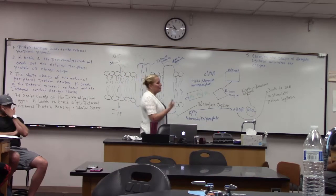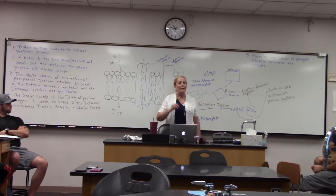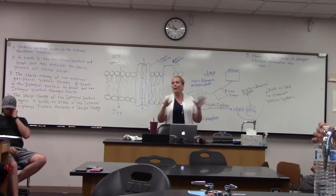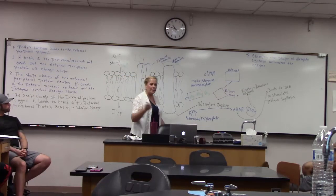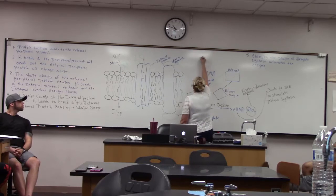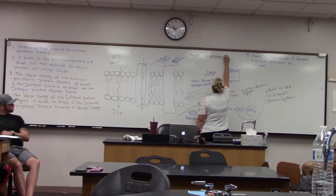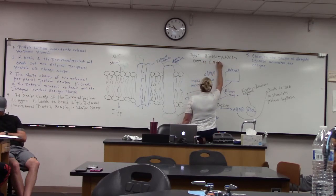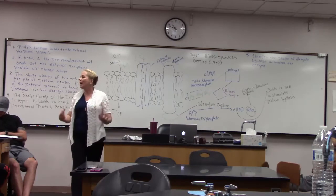When we do get an organ transplant — liver, kidney, lung — we look for a donor that has extremely similar patterns of glycolipids and glycoproteins. Best case is an identical twin, because the immune system would be totally fooled and think the organ belonged to us. Instead of calling them glycolipids and glycoproteins, scientists called this the major histocompatibility complex, or MHC. So we look at the shapes of a person's MHC to determine compatibility.